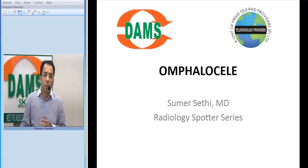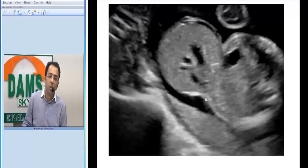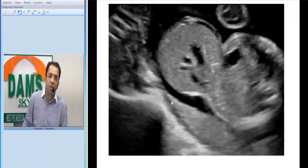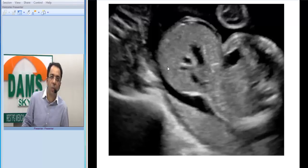To understand how it would come in your exam, this is how an antenatal ultrasound of the fetus looks like. You can see the placenta, the amniotic fluid all around, and the fetal abdomen. From the ventral side, you can see a defect in the anterior abdominal wall through which the liver is seen herniating out.